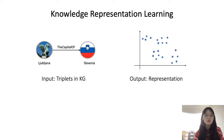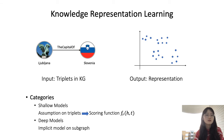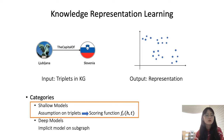To deal with this problem, knowledge graph representation learning is proposed. The input is the triplet in the knowledge graph and the output is the representation. The existing methods can be roughly divided into two categories. The first are shallow models, which always make mathematical assumptions on triplets and then define a scoring function that valid triplets should satisfy. The second are deep models, which implicitly model the subgraphs of entities and relations. Considering interpretability, we focus on shallow models in our work.